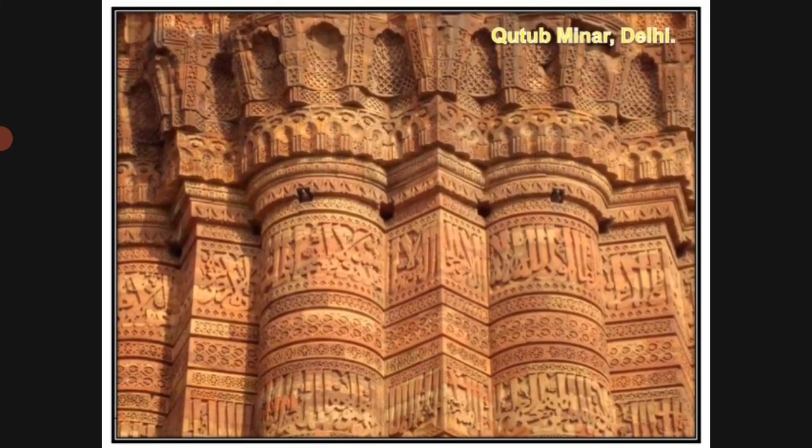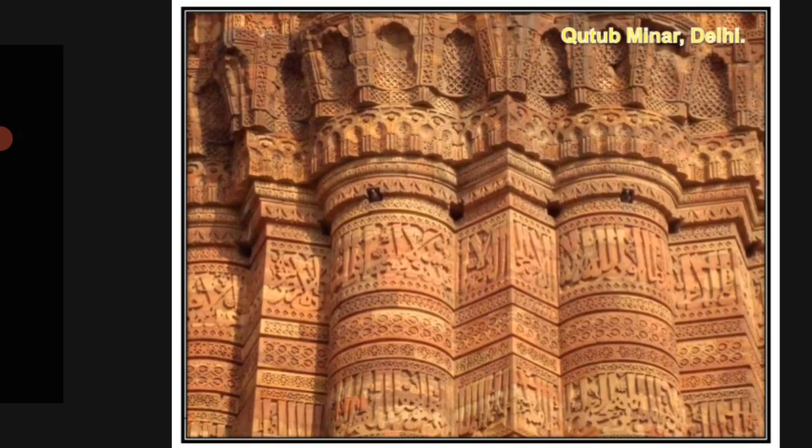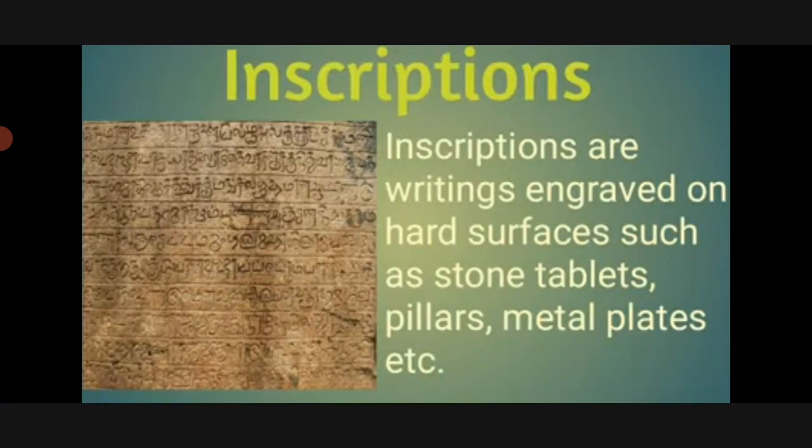Inscriptions from South India record proclamations. Proclamations are the official announcements by kings and gifts to temples and learned men. Inscriptions are writings engraved on hard surfaces such as stone tablets, pillars, metal plates, etc. Some of these inscriptions are recorded on copper plates and some are inscribed on temple walls.